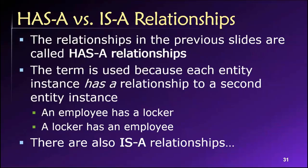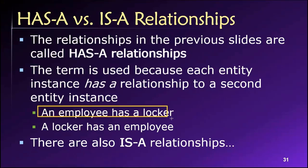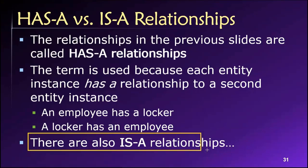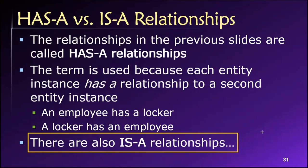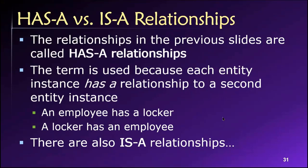At this point, we can transition into a new type of relationship — contrasting 'has' relationships with 'is' relationships. Most of the relationships we've worked with thus far have been 'has' relationships. For example, an employee has a locker, a department has employees, or an employee can have employee skills. So these are all 'has a' relationships, but there are also 'is' relationships that we'll get to, and we need to learn how to represent them in our entity relationship diagrams.